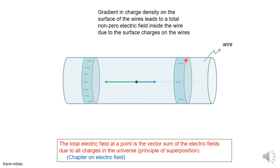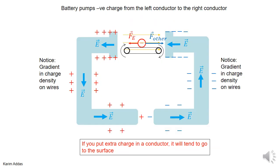Similarly, in regions where you have higher negative charge density and lower negative charge density along the wire, the higher-density negative charge makes a larger electric field pointing toward itself, and the lower-density region makes a smaller field. The net electric field points toward the region of higher negative charge density — to the left in this case. That's what's happening inside the wire.